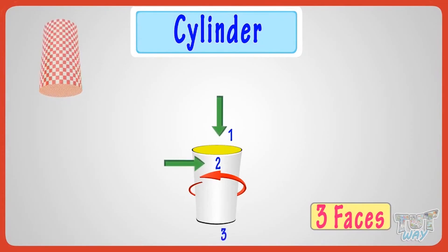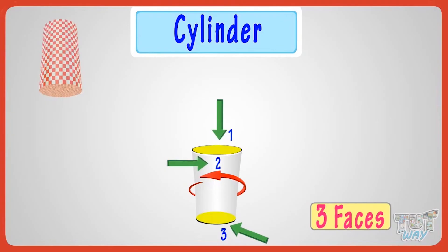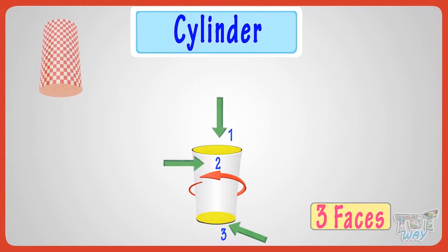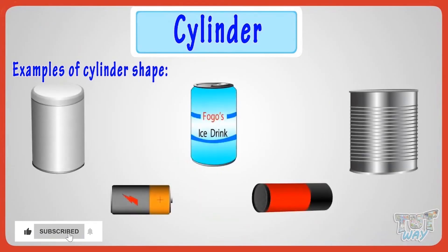The third one is also a round shaped face on the other side of the curved surface. Now let's see some cylinder shaped things in our house. These are some of the cylinder shaped objects we have in our house — you must be familiar with them!